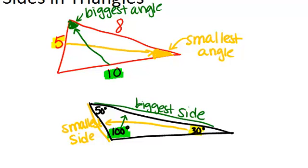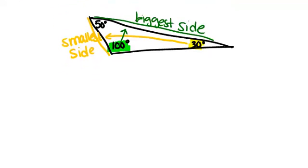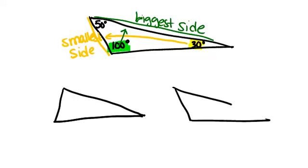We can use this relationship to compare two triangles. So let's say we have two triangles that have two pairs of congruent sides. So this side is congruent to this side, and this side is congruent to this side.